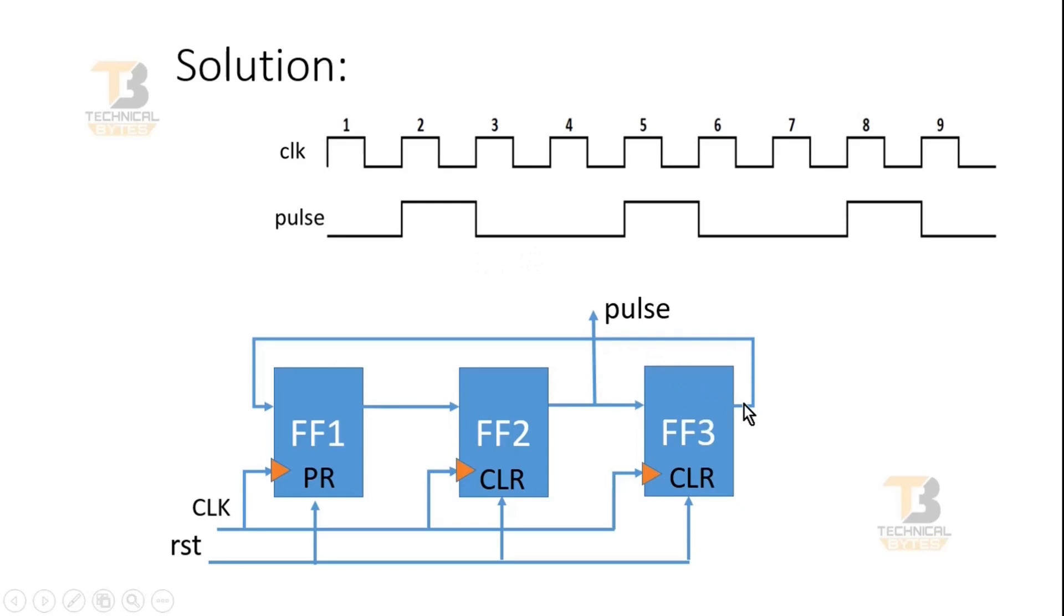And in the next clock cycle, this one will be transferred at the output of first flip flop. At that time, output of second flip flop and third flip flop will be 0. And that is also my expectation. And in the next clock cycle, fifth clock cycle, this one will be transferred again at the output of second flip flop. And we will get 1 here, which is my pulse signal.